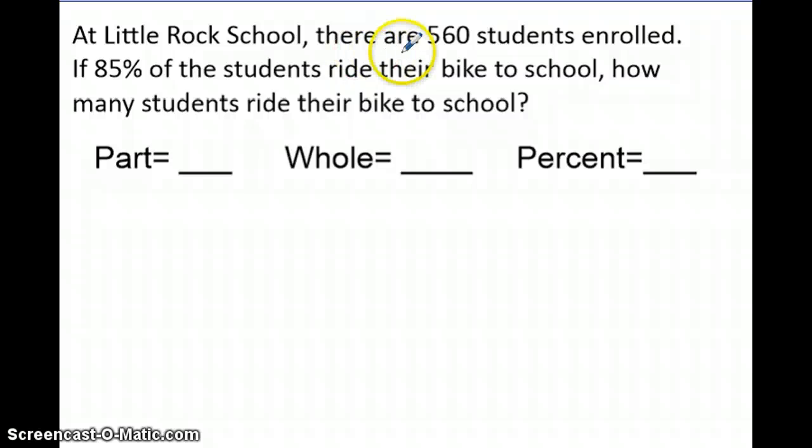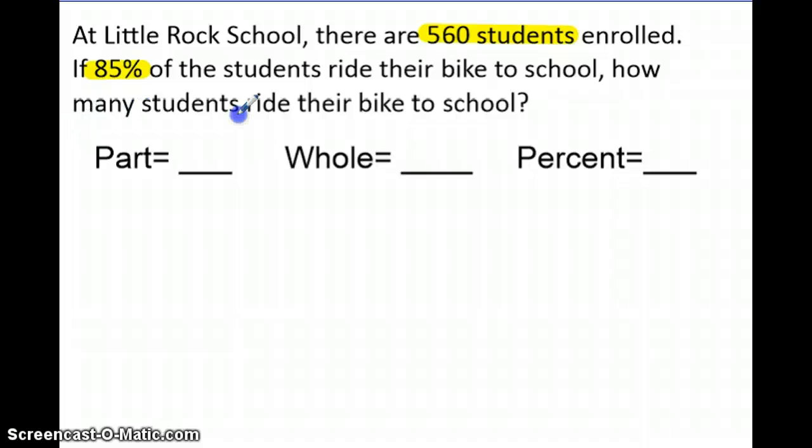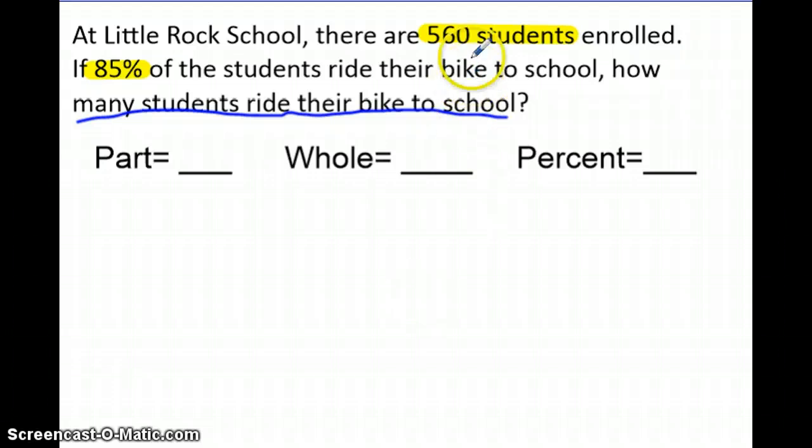At Little Rock School, there are 560 students enrolled. If 85% of the students ride their bike to school, how many students ride their bike to school? So let's look at what we know. There are 560 students enrolled and 85%. We want to determine how many students ride their bike to the school. So let's break this down. 560 students. This problem is saying that in that whole entire school, there are 560 students. So we know that 560 represents the whole.